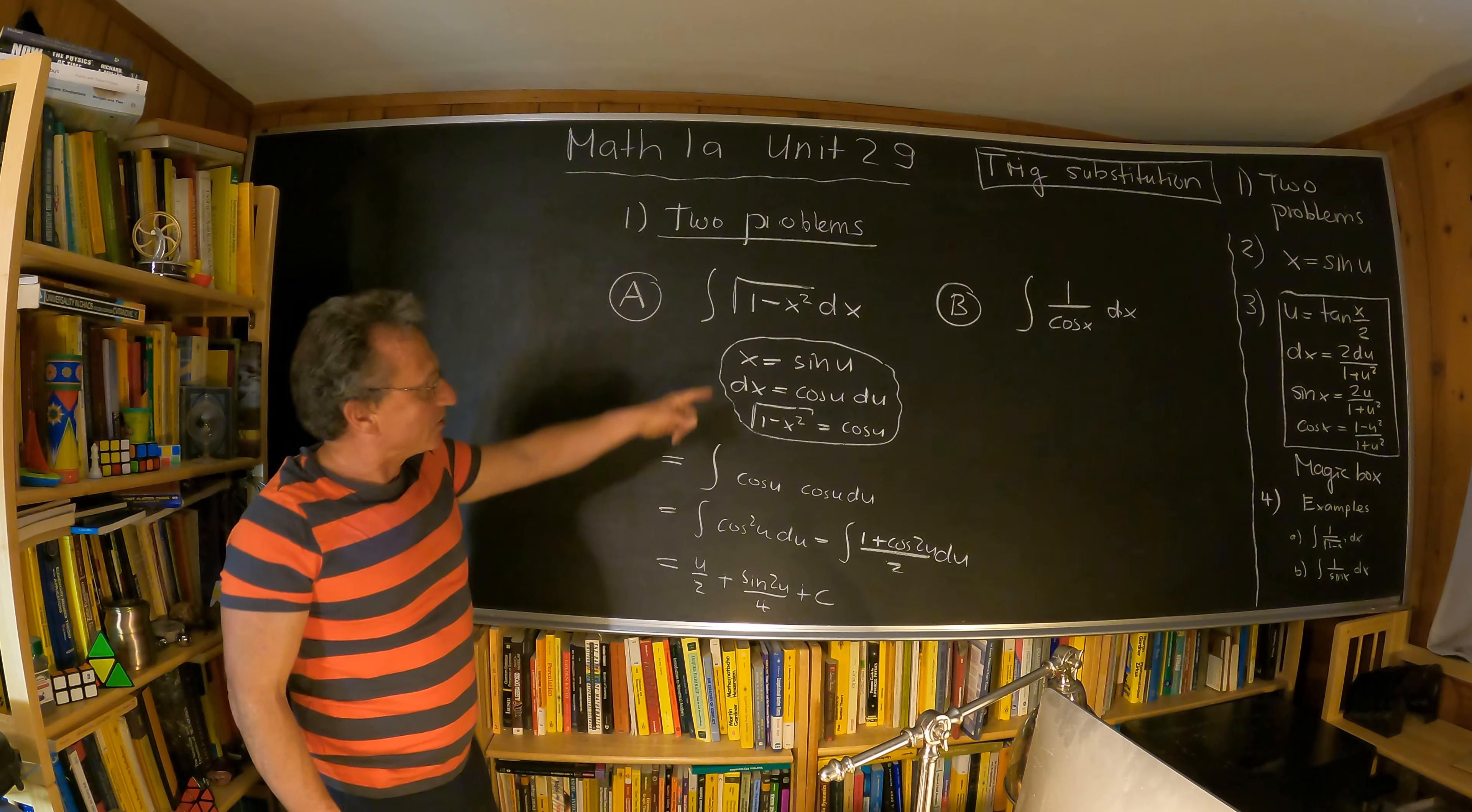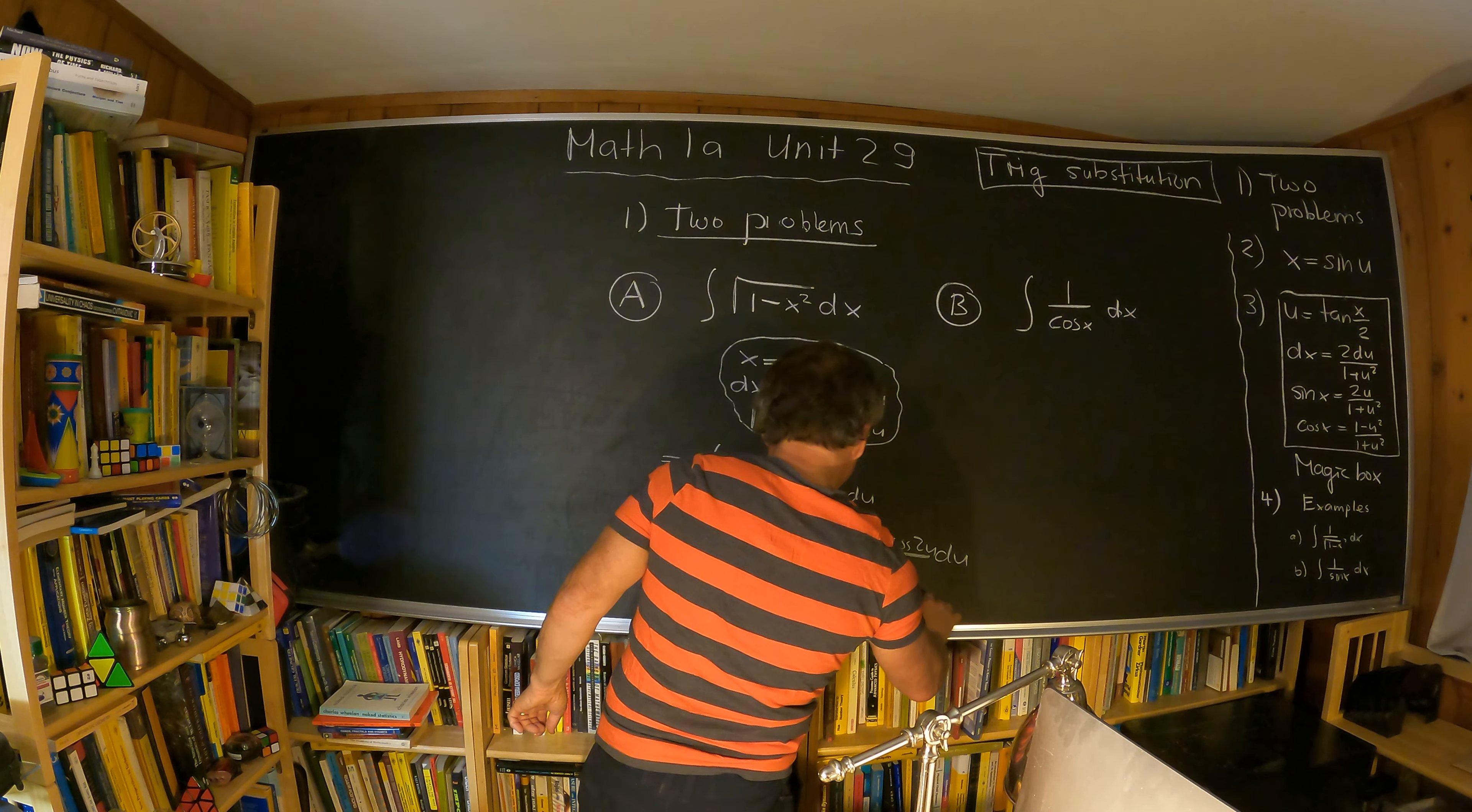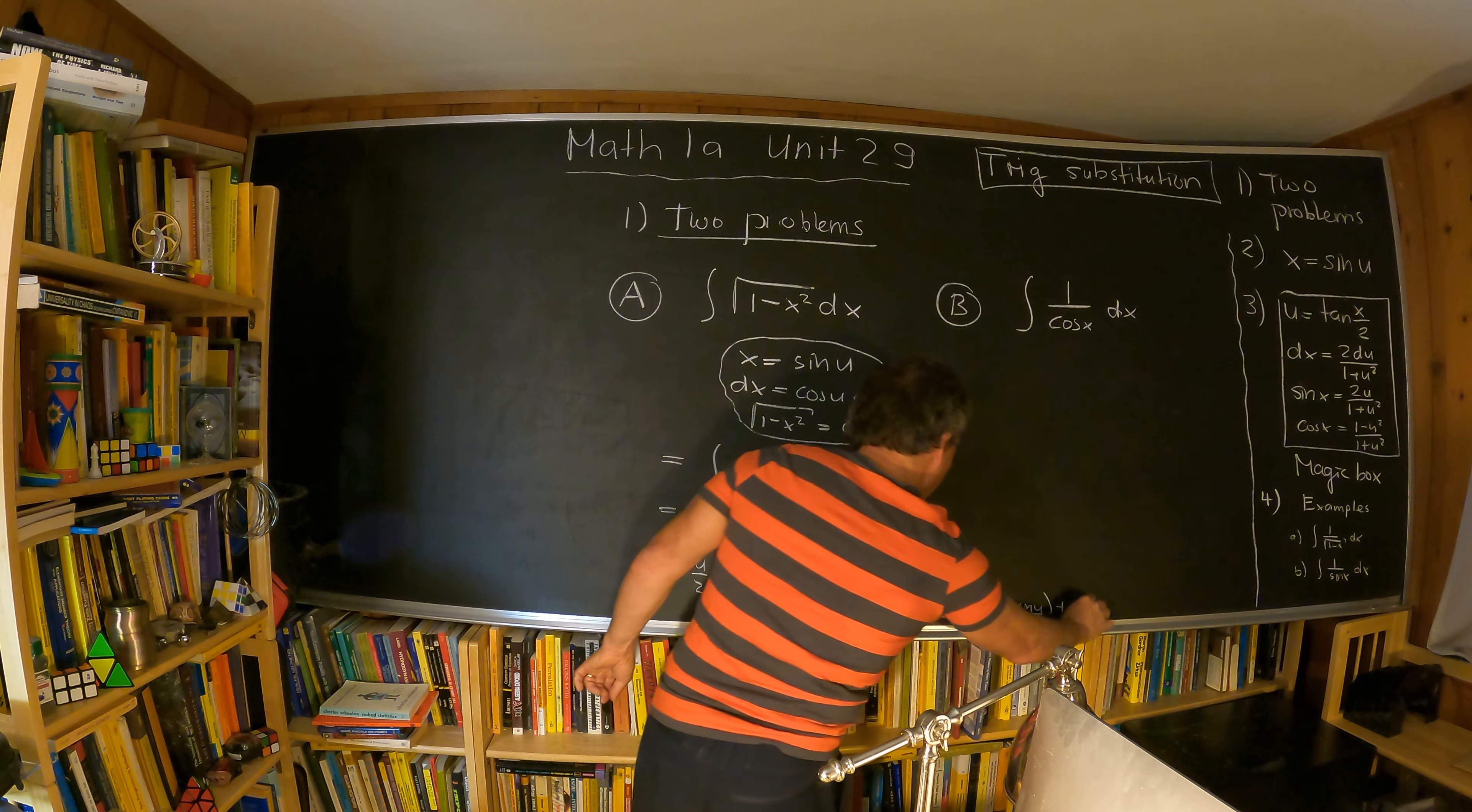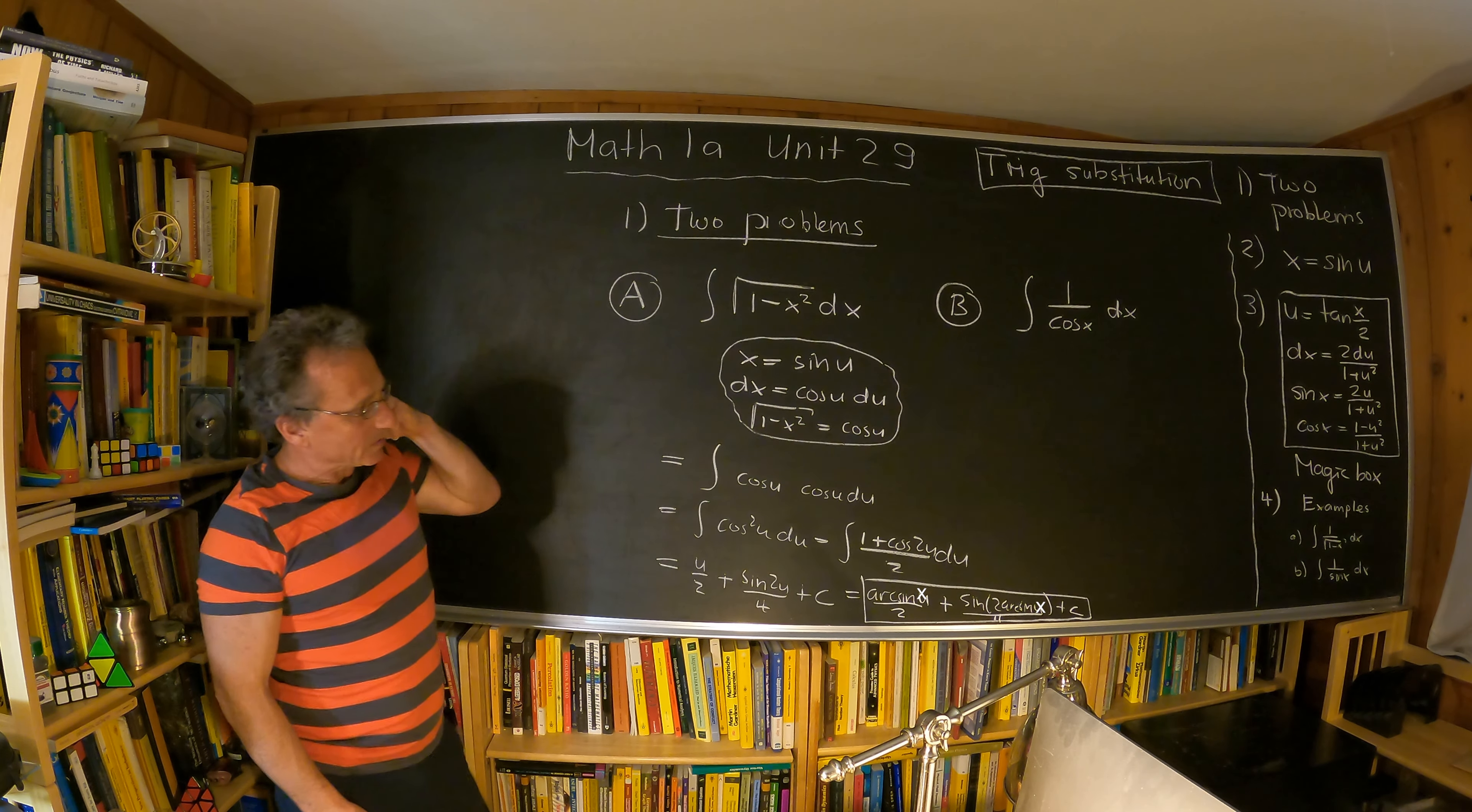And now we back substitute, the u equals arc sine if you want. So this is arc sine of x over 2 plus sine of two times arc sine of x over 4. So this is the final answer of the integration problem.